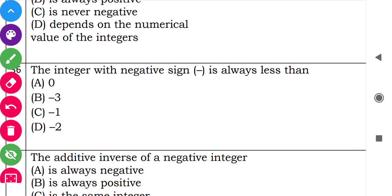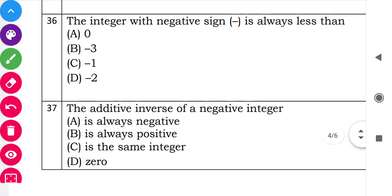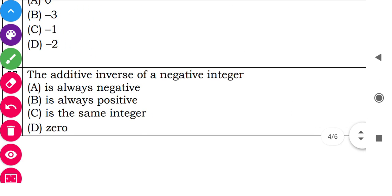Question 36: 'An integer with a negative sign is always less than 0.' This is true — all negative integers are less than zero. Question 37: 'The additive inverse of a negative integer is always a positive integer.' This is also correct.